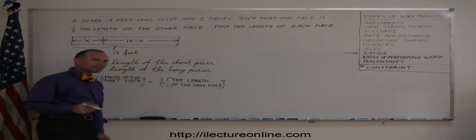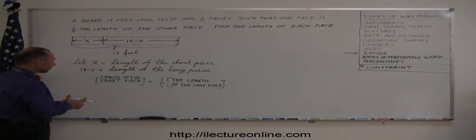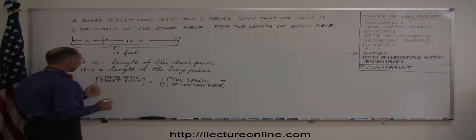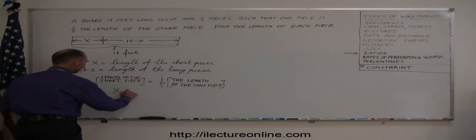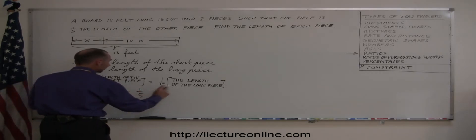So you can see that mathematical equations are basically just mathematical translations of an English sentence. So if you now represent x for the length of the short piece, so x is therefore equal to one-fifth the length of the long piece, and the long piece is 18 minus x.